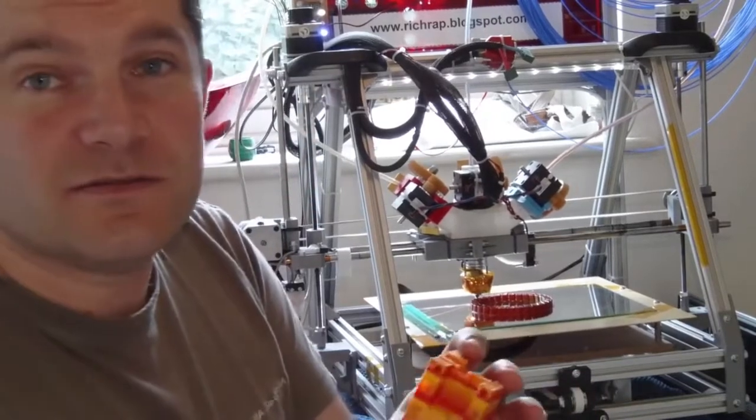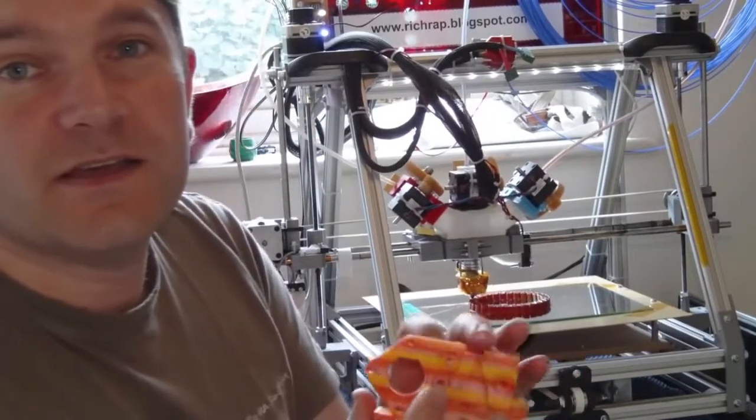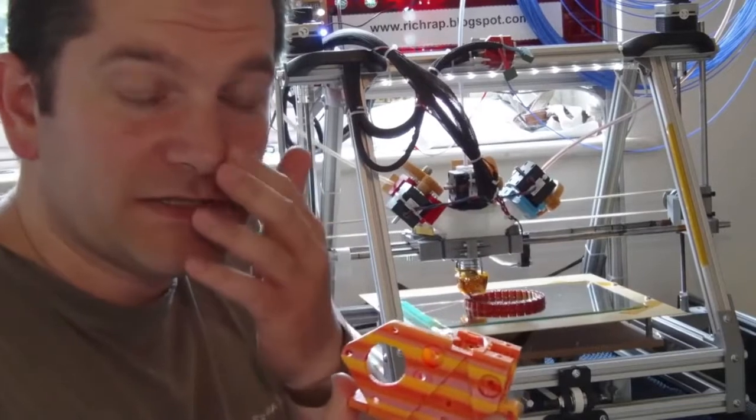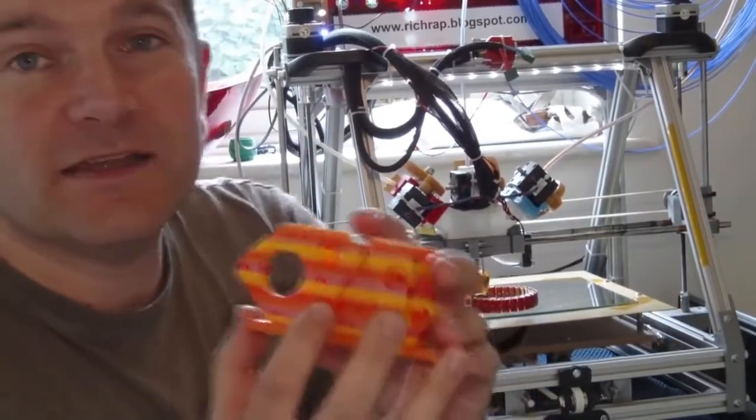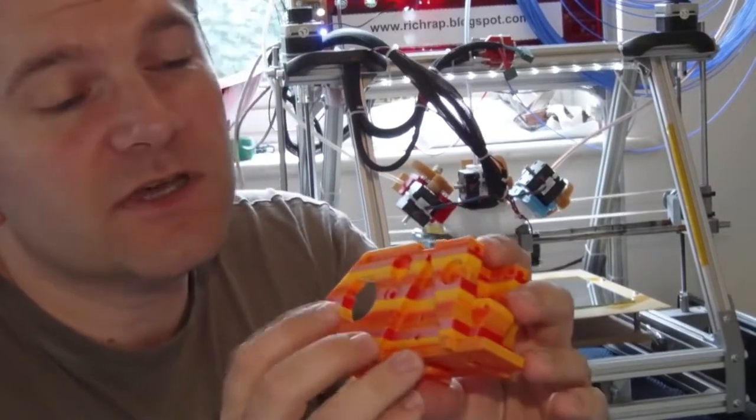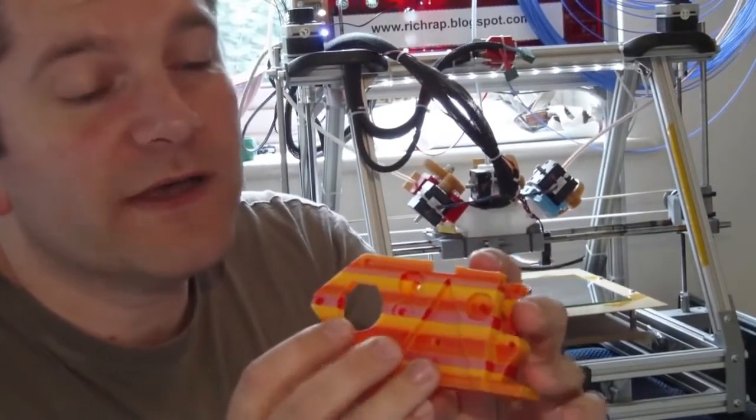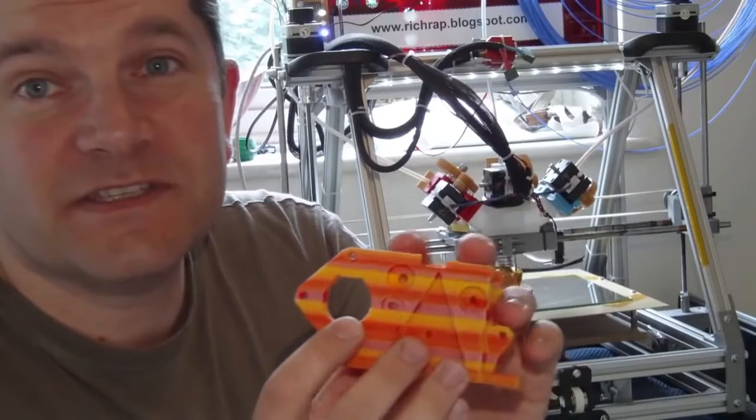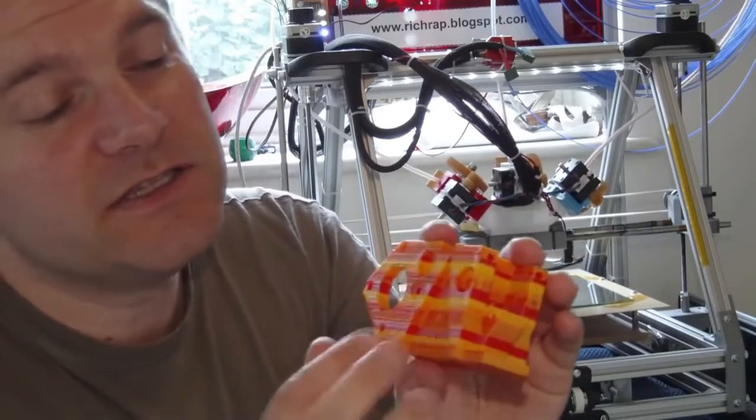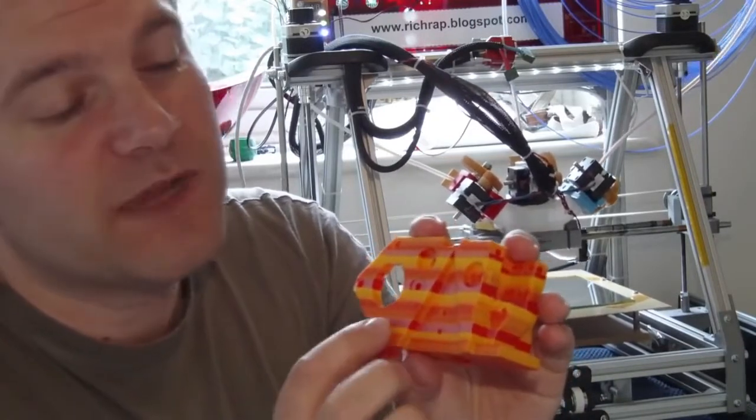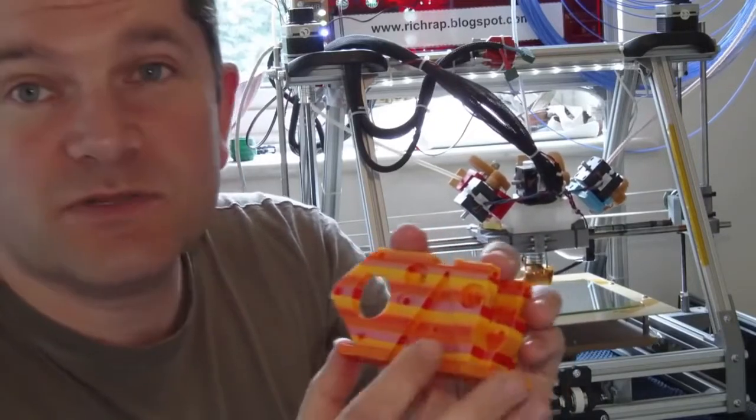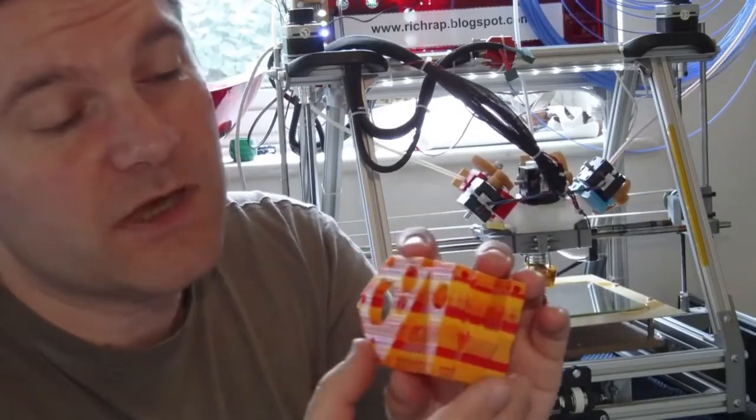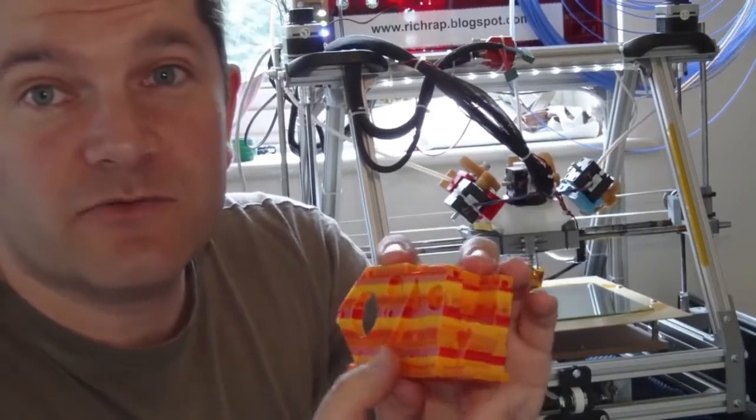First of all, I've got this little one that I printed earlier. This is one of my universal paste extruders and it's actually got pearl white, yellow, and red fitted. And these are color switched so they've been blended, two colors have been blended together.